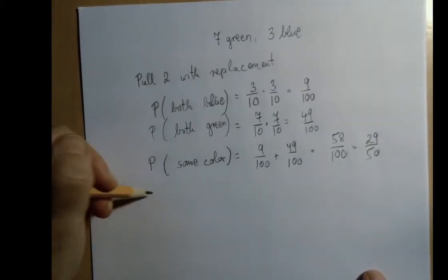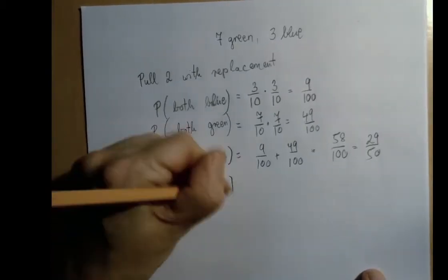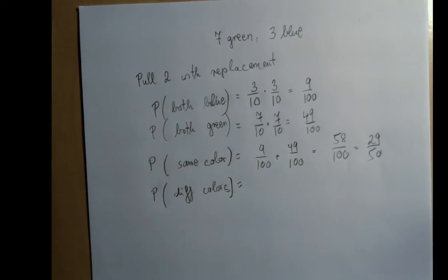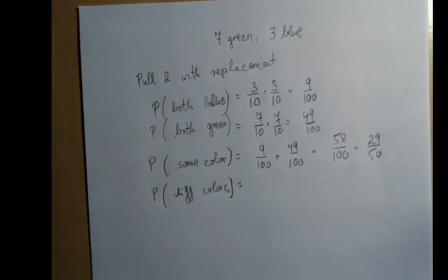The probability that they have different colors, we could compute first green, then blue. That would be 7 over 10 times 3 over 10, or the other way around, so 3 over 10 times 7 over 10, so that would be 42 out of 100.